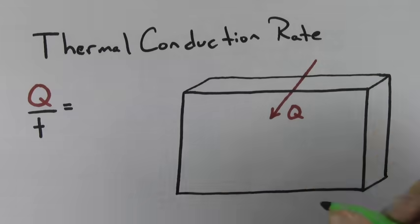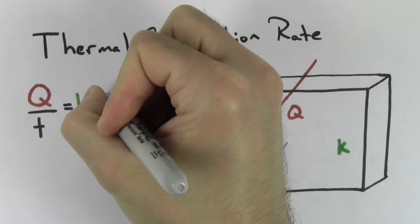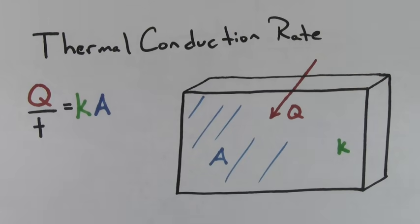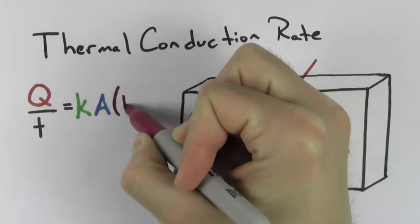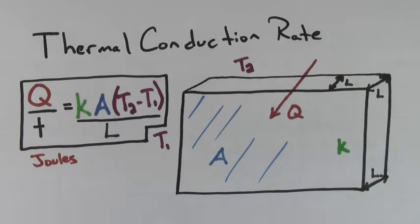Thermal conductivity refers to the rate at which heat flows through a substance. It's proportional to K, the coefficient of thermal conduction for that material. It's also proportional to A, the surface area of the material, and the difference in temperature between one side and the other. But it's inversely proportional to the thickness. It's measured in joules per second, which is just watts.